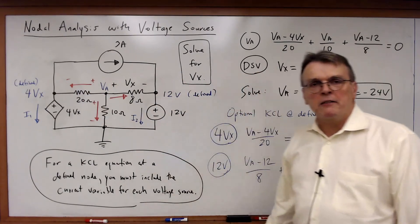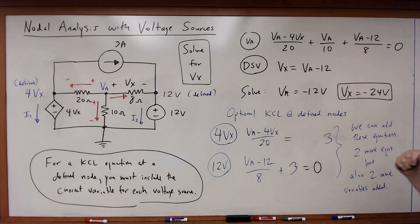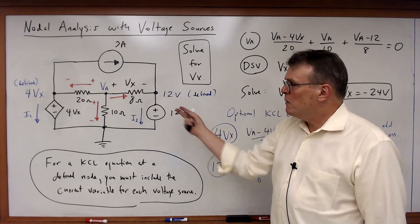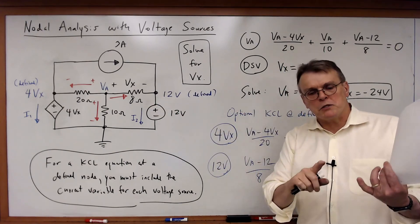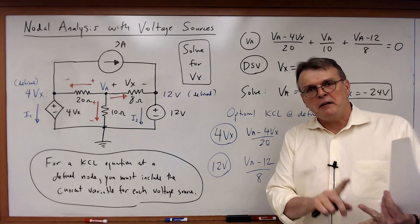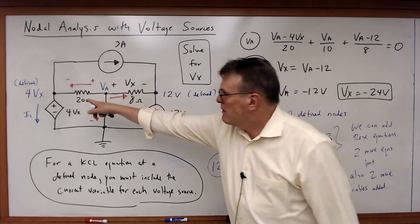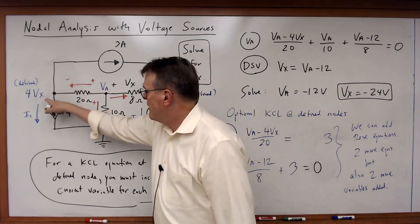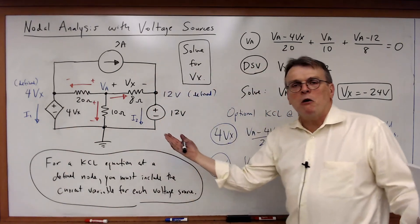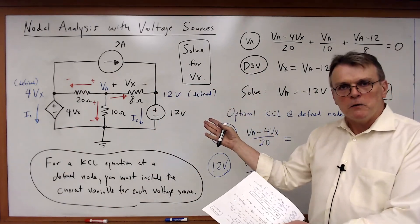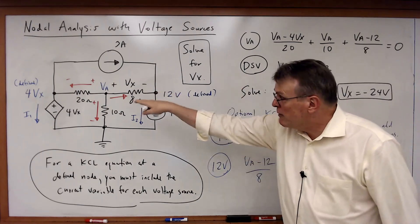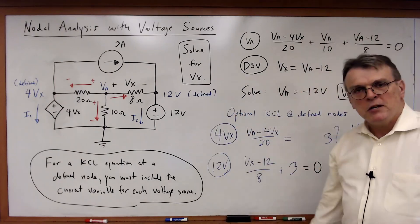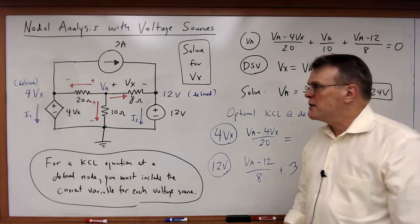Every branch must have a current, don't forget that. Now one last thing with this problem, what about the constraints? I have two voltage sources. Remember I said voltage sources need a current variable, they need a constraint. Where's the constraint? Right there in the schematic. 12 minus 0 is 12. 4Vx minus 0 is 4Vx. I just wrote it right there. So the constraints are still there for each voltage source, I'm just putting them directly in the schematic, right there in the circuit.